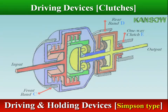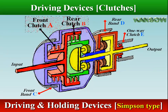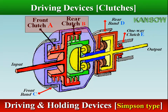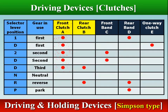An example of the driving devices involves the two clutches in front of a Simpson gear train transmission: front clutch and rear clutch. The front clutch engages in all forward gears, but the rear clutch engages in third gear and reverse.